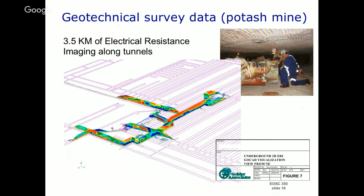Coming back to the potash mines — these things are really absolutely incredible. This is all a kilometer underground. There is, I believe, in Saskatchewan something in the order of 20,000 kilometers of these mines. They have just great big fleets of trucks under there going back and forth, pulling out huge amounts of salt. What they're interested in is where the water is. There's a survey that can be done called a DC survey.